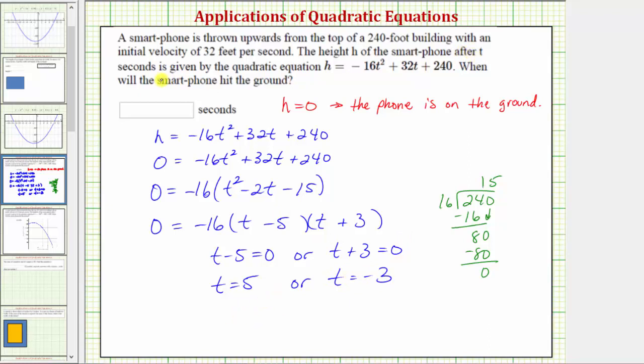But remember, t represents time in seconds. So while t equals negative 3 does satisfy our equation algebraically, it's not a solution to our application. So now we know the smartphone hits the ground after 5 seconds. Therefore, we enter 5 here in the answer cell.